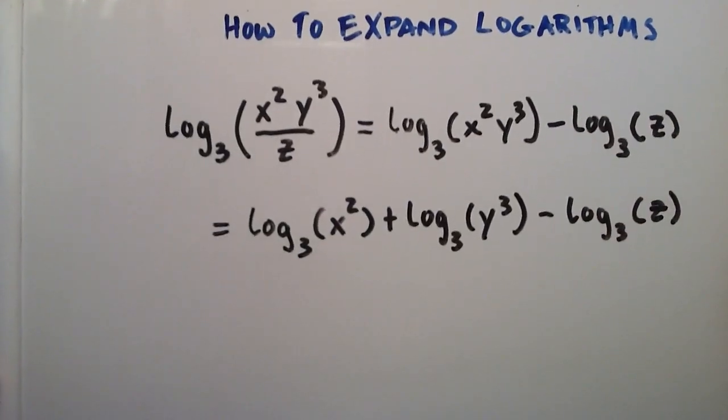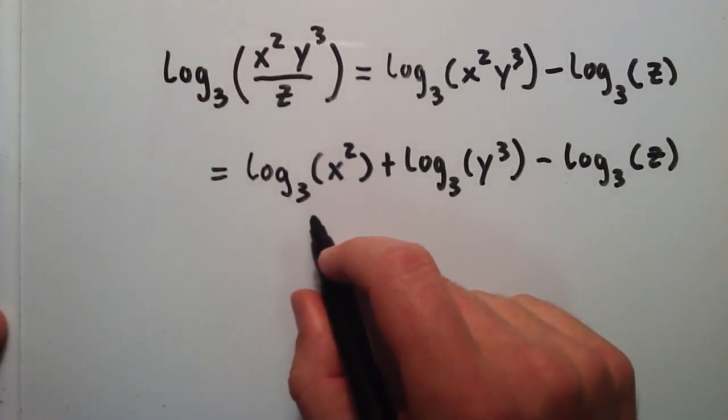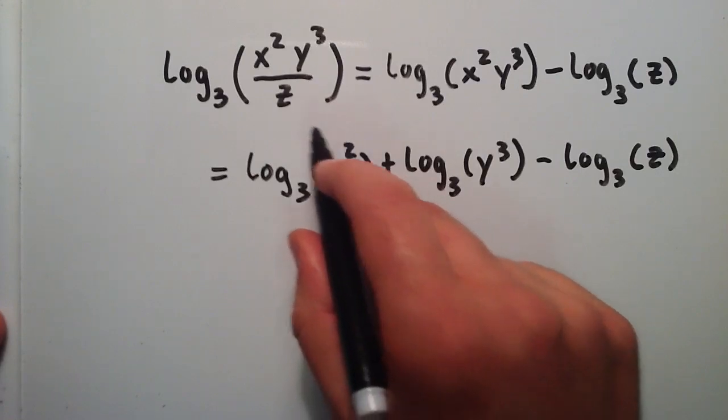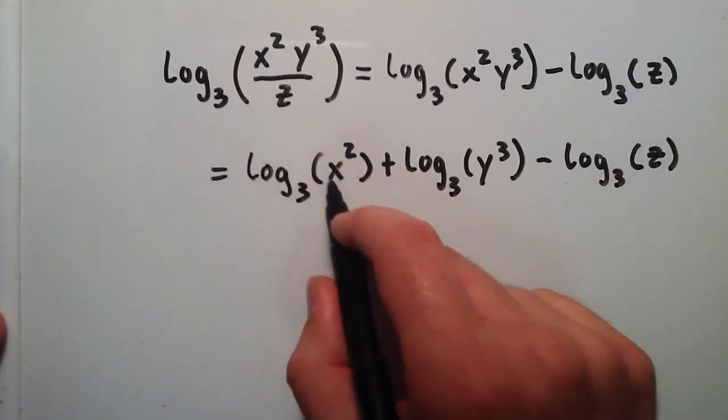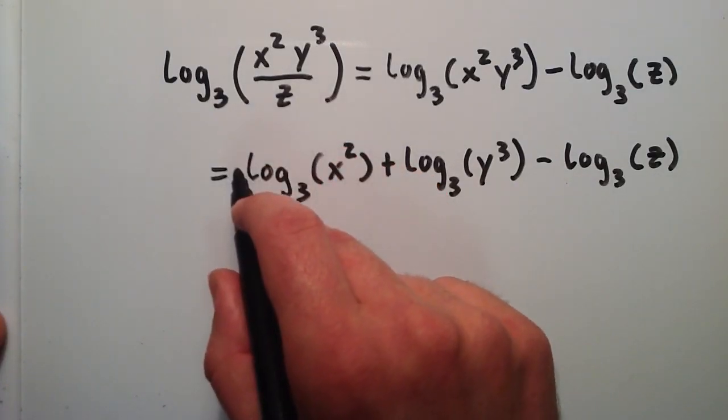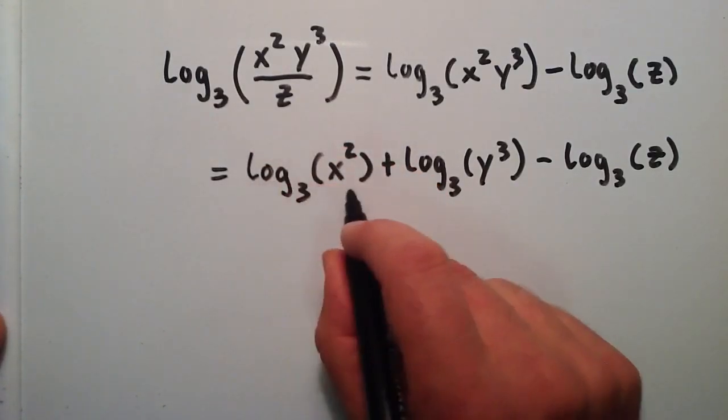And this last term is simplified, so we're just going to go ahead and rewrite it. And so now we have another property we can use. One of the things I told you earlier was that you can take an exponent and bring it out front. So if you have some number raised to some power, you can bring that exponent out front of the logarithm. So let's go ahead and do that for both of these terms.